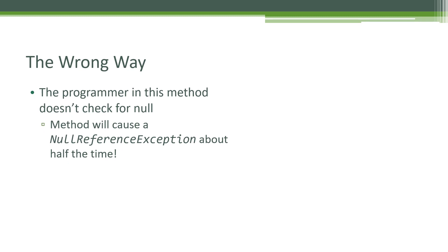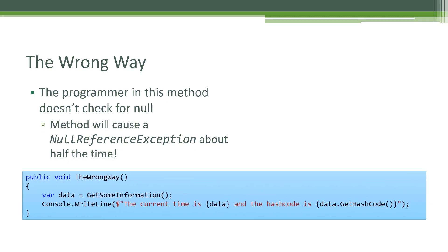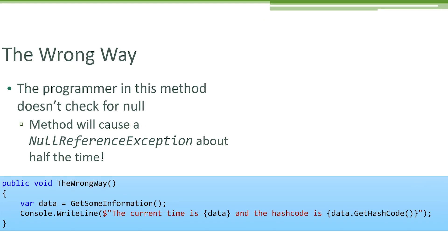The wrong way to access this method is to simply call it and not check to see if the result is null. In this example, the programmer assumes that data contains a string and they display that data. They also display the hash code of that string. The data inside the curly braces here does not produce a syntax error — the interpolated string simply ignores the null.